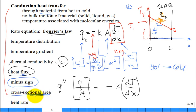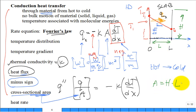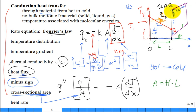About 1% of students get confused about what area A is. If the slab has height H and width W, the area perpendicular to heat flow is H×W — nothing to do with L, the thickness. It's the area perpendicular to the flow of heat.